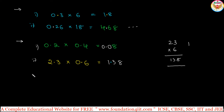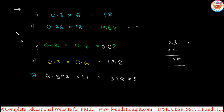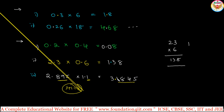One more example: 2.895 multiplied by 1.1. So 2895 multiplied by 11 using the normal method gives 31845. Then adjust the decimal point: after the point in 2.895 there are 3 decimals, and in 1.1 there is 1 decimal — total 4 decimal places. From the right side, leave 4 decimal places in the answer.